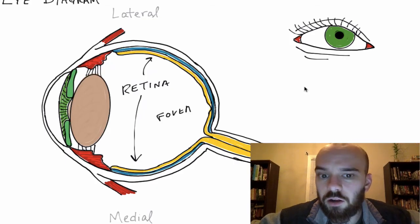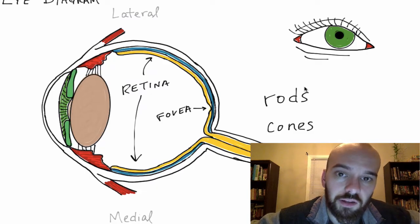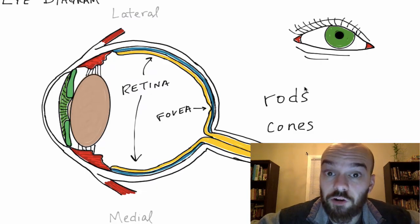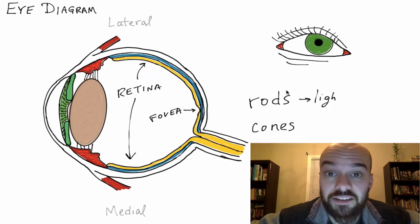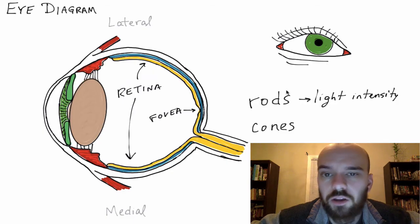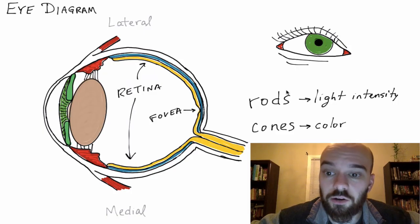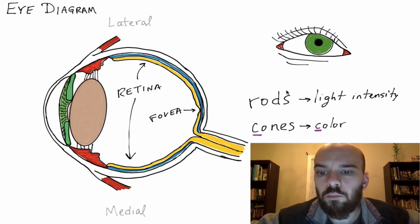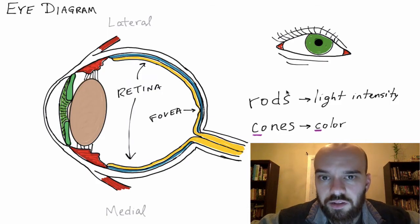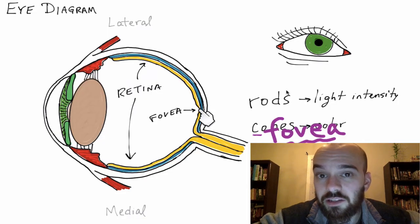There's one special part of the retina called the fovea, and most of the rods and cones in your eye are in the fovea. The rods are going to detect the intensity of light — how bright the light is — and the cones are going to detect the color. One way to help remember which is which: color and cones both start with a C. Most of the rods and cones are located in the fovea, that little indention.